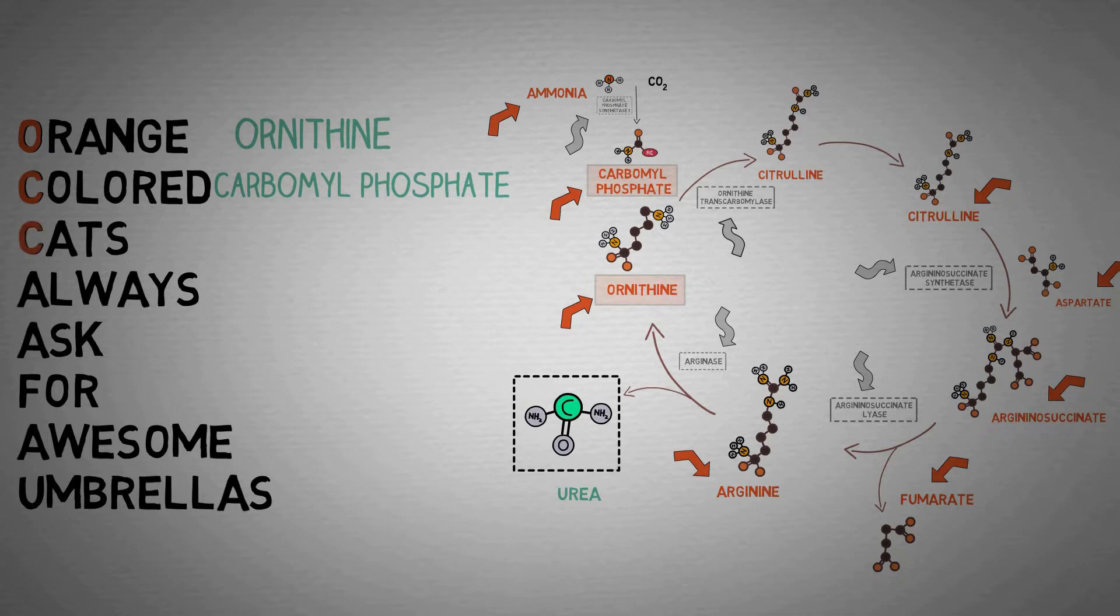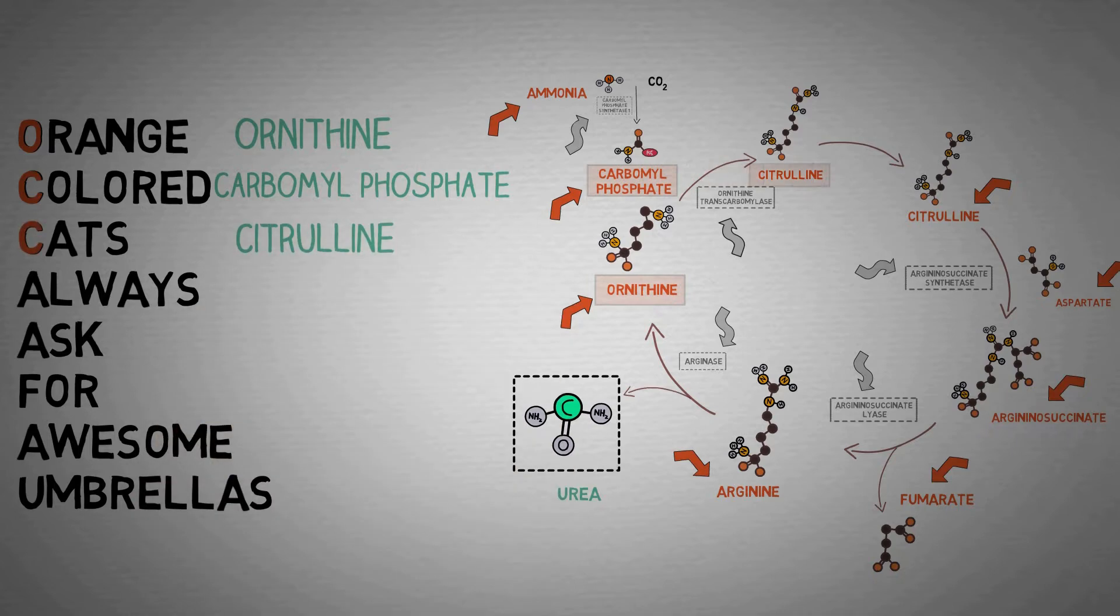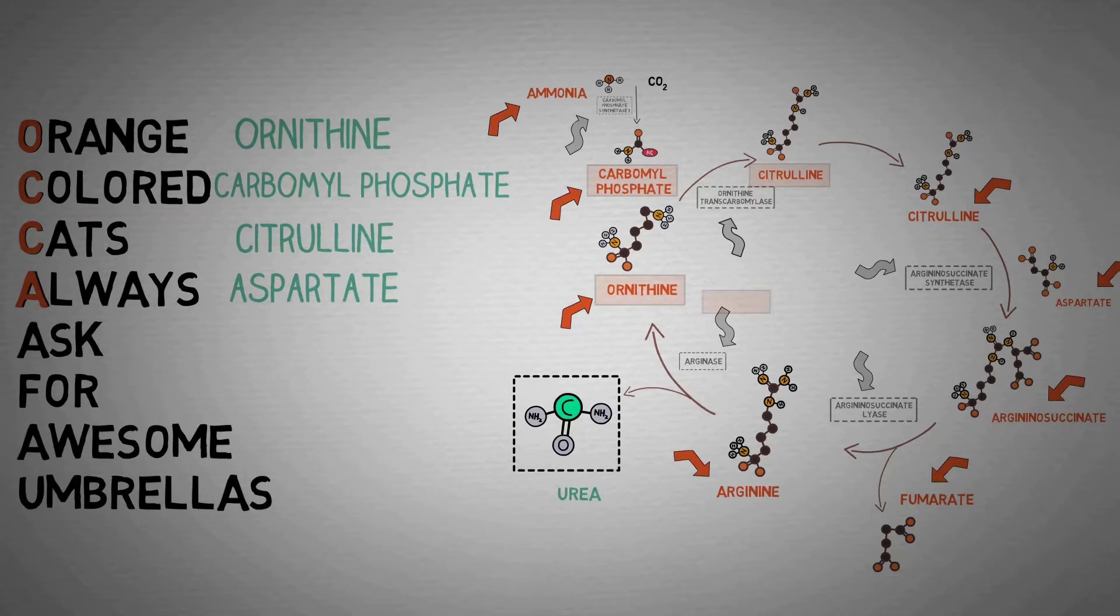The C in cats stands for our next molecule, citrulline. Citrulline is formed by the combination of carbonyl phosphate with ornithine. The A in always stands for aspartate, which is this amino acid here that gets combined with citrulline.